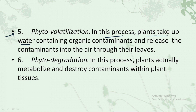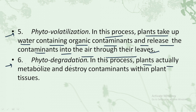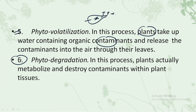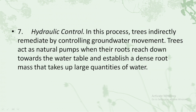The fifth mechanism is phytovolatilization. In this process the plants take up water containing organic contaminants and release the contaminants into the air through their leaves. The sixth mechanism is phytodegradation, in which the plant actually metabolizes and destroys the contaminants within the plant tissue itself.